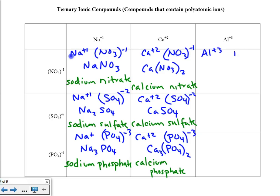Aluminum and nitrate: Al⁺³ and NO₃⁻¹. Crisscrossing, we get Al(NO₃)₃ — one aluminum is needed to match up with three of these nitrates. The name of this is aluminum nitrate.